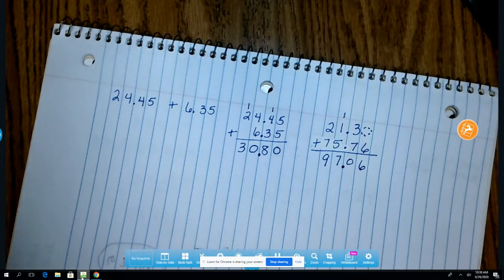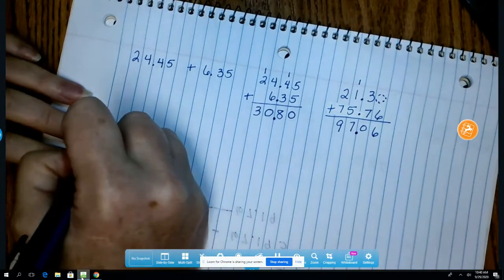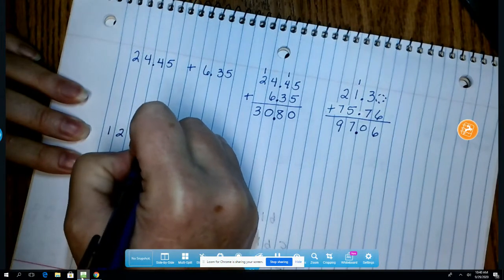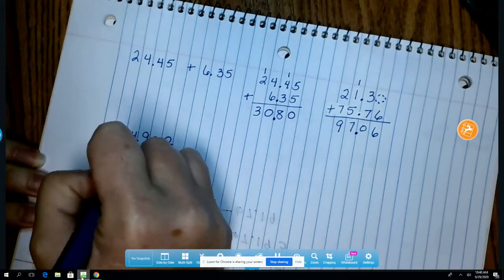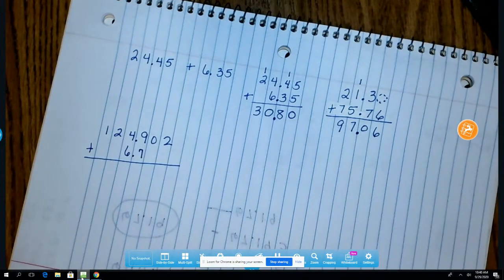Now the third step I'm going to show you is I want you to go ahead and get in the habit of it now because it will help you come subtraction time. So let's say that I have 124 and 902 thousandths plus 6 and 7 tenths. So again, anywhere that does not have a number has an invisible zero. If you want to write the zero there you can certainly do that.